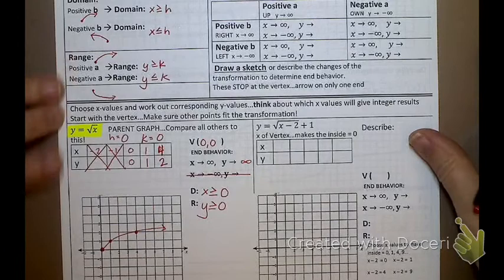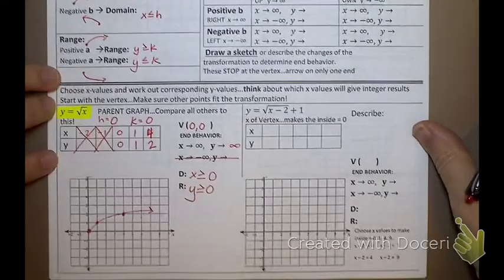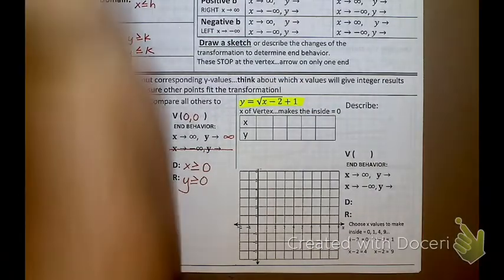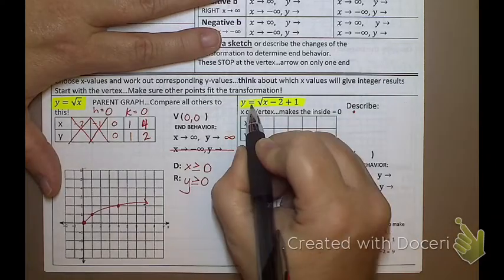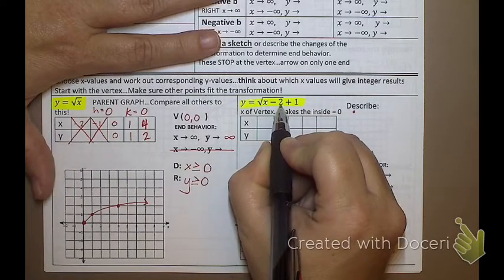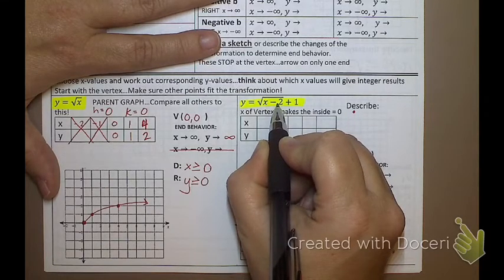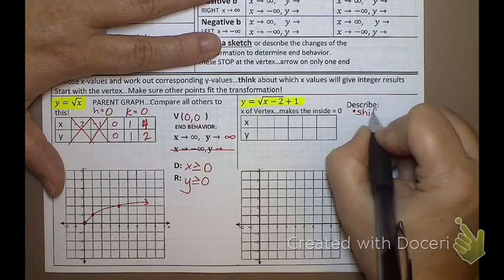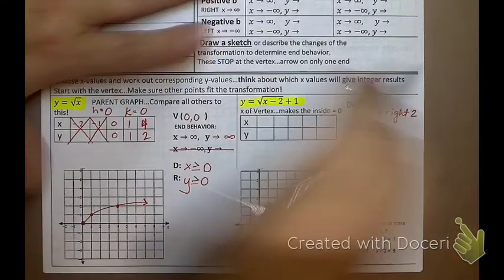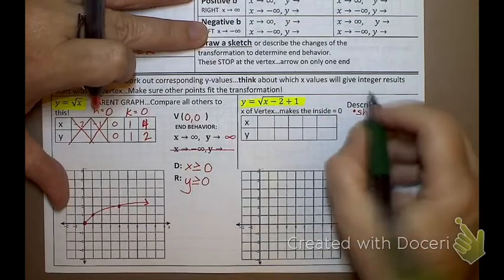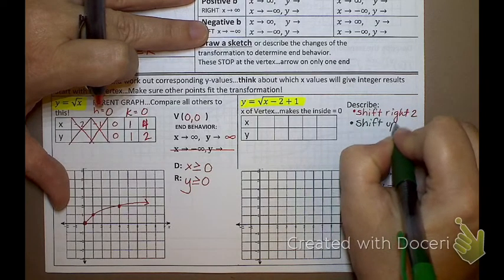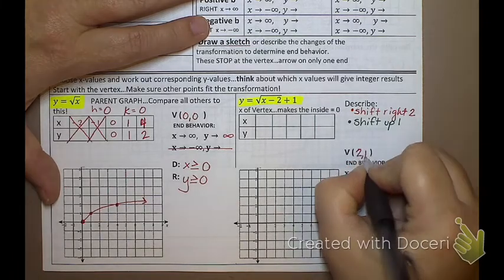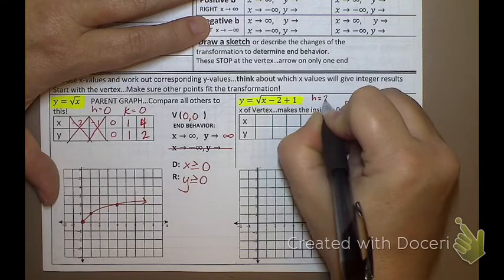Let's go to our next graph. Describe what's going on — the first number I see is a minus 2, which really means a positive 2. What do we do with h values? Always switch the sign. So it's really a positive 2 — I have a shift right 2. What else? The next number I see is a 1, so I have a shift up 1. What's my vertex? 2, 1 — because h is 2 and k is 1.